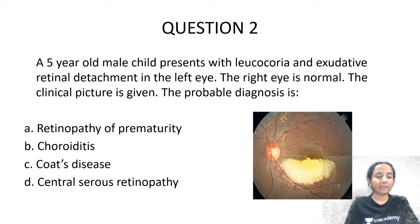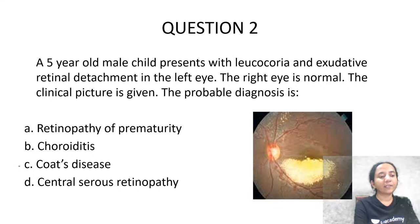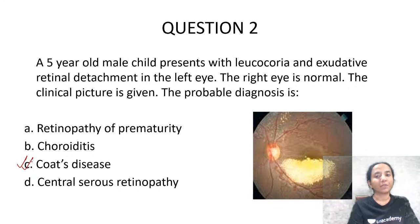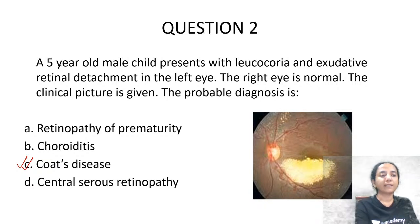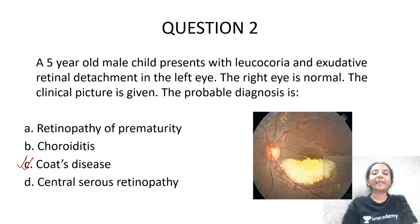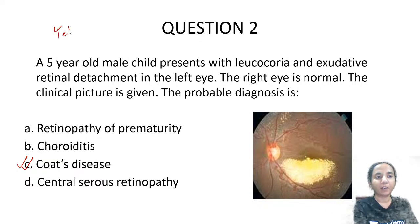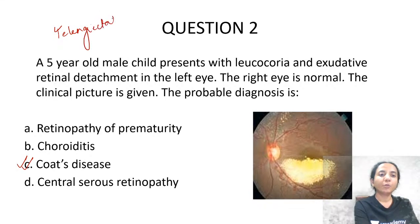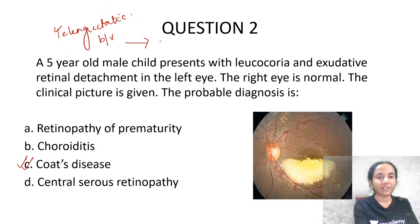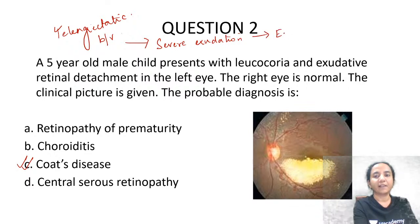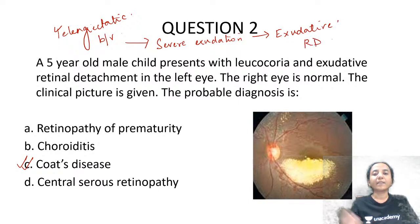The answer is Coats disease. Coats disease is a condition where you have retinal telangiectasia — abnormal telangiectatic blood vessels in the retina. These abnormal blood vessels are associated with severe exudation, and this exudation leads to exudative retinal detachment. The telangiectatic blood vessels are commonly seen in the inferotemporal quadrant of the retina.